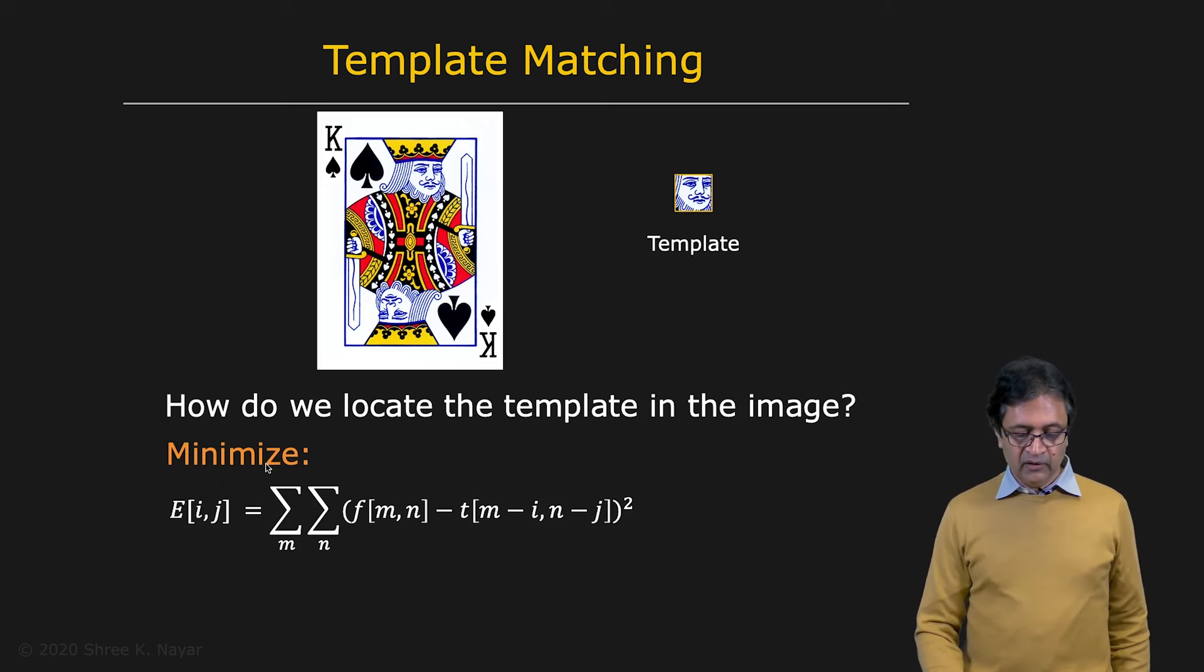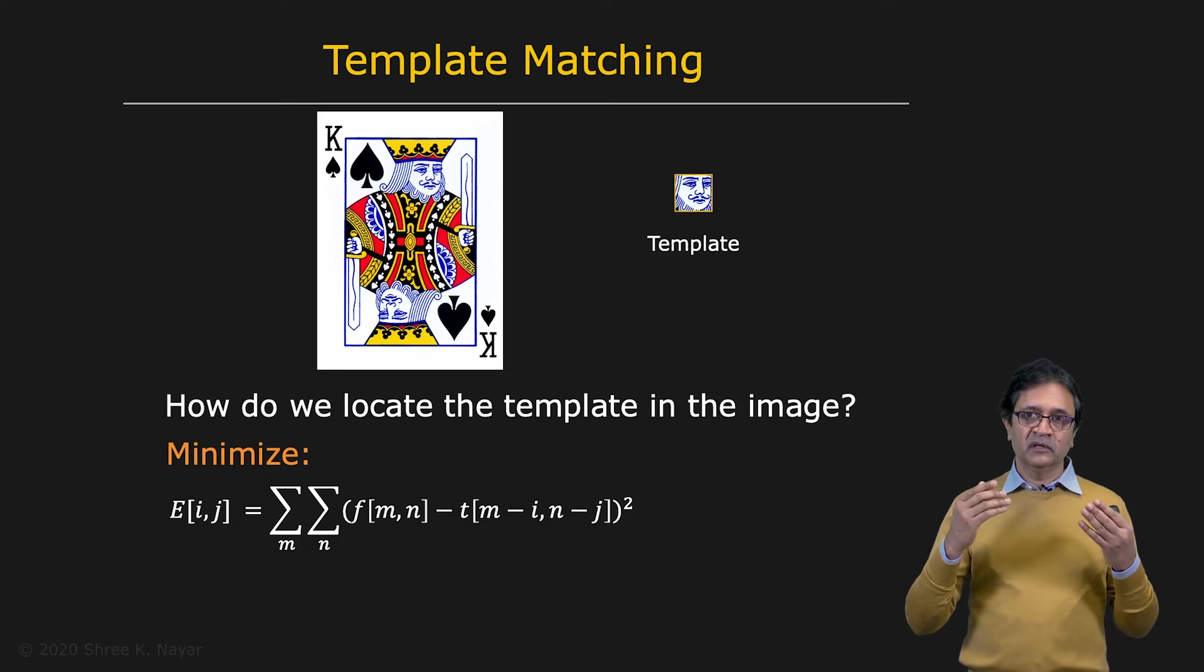We can say what we want to do is minimize the difference between the template and the image. So you take the difference between those two, you square up all of those differences, and then you add them up. This is called the sum of squared differences. And when that's zero, you know that you've found a part of the image that looks exactly like the template.